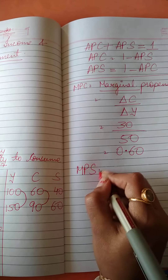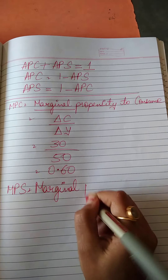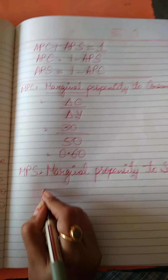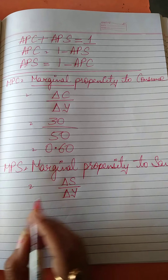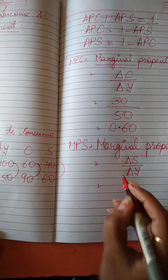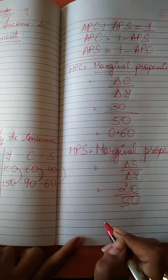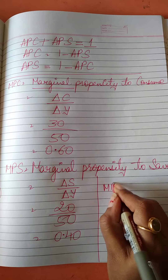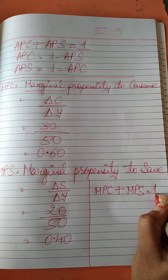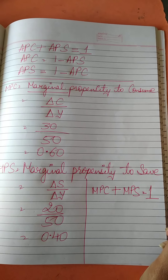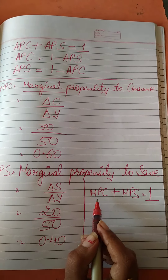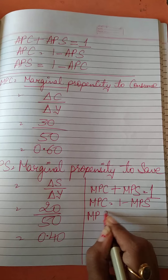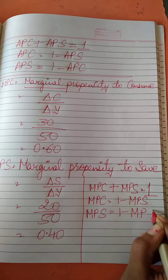We also have MPS, that is Marginal Propensity to Save. It is delta S upon delta Y. In our example, delta S is 20 and delta Y is 50, so MPS equals 0.40. Therefore, MPC plus MPS is also equal to one — whatever change comes in income is either consumed or saved. MPC equals one minus MPS and MPS equals one minus MPC.